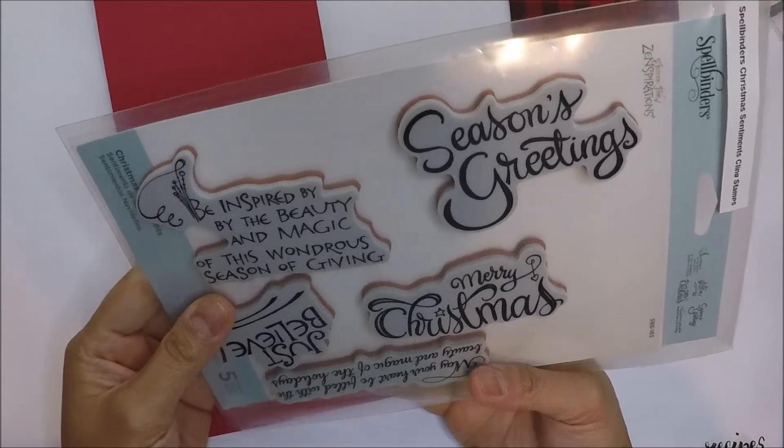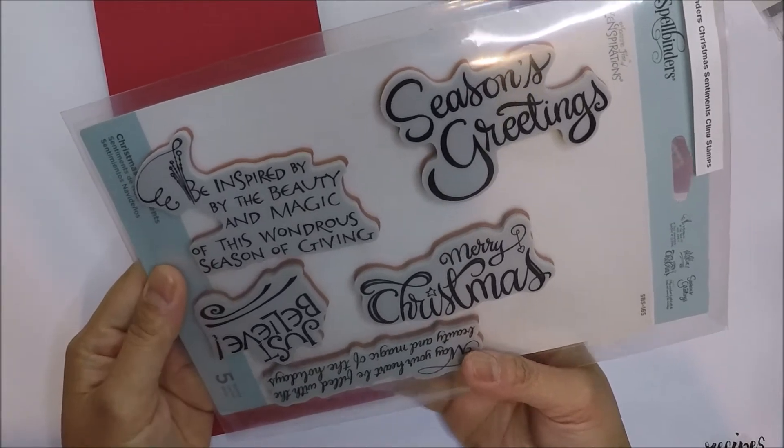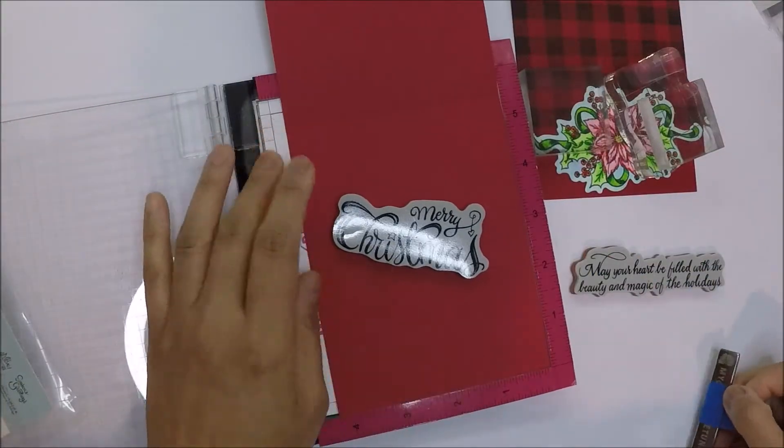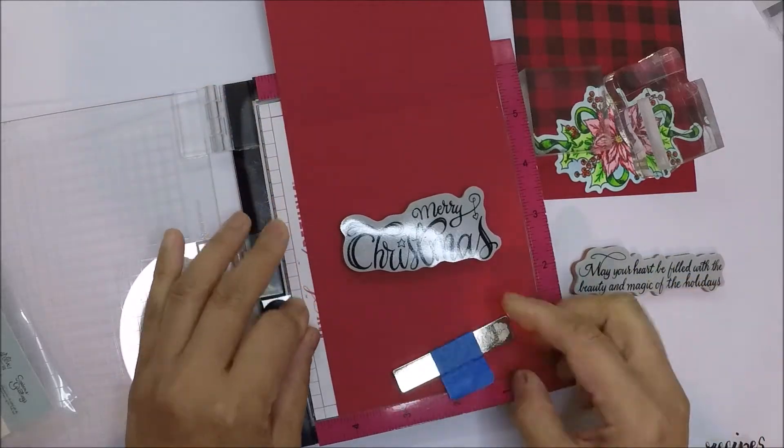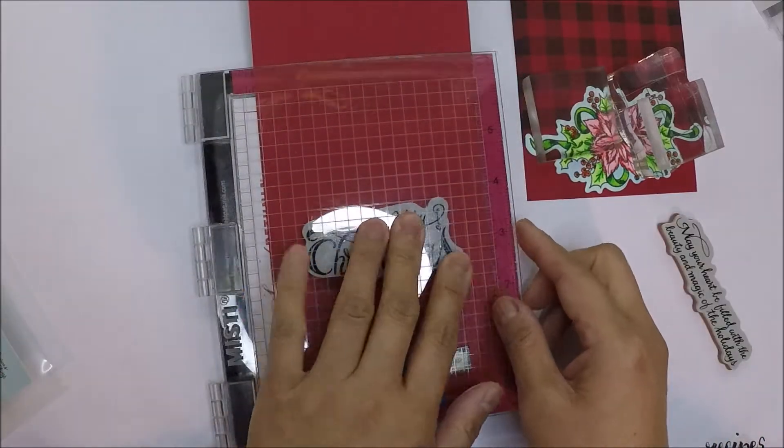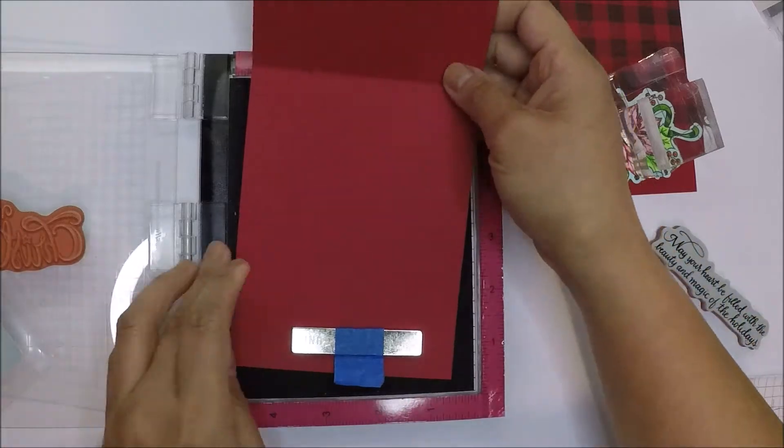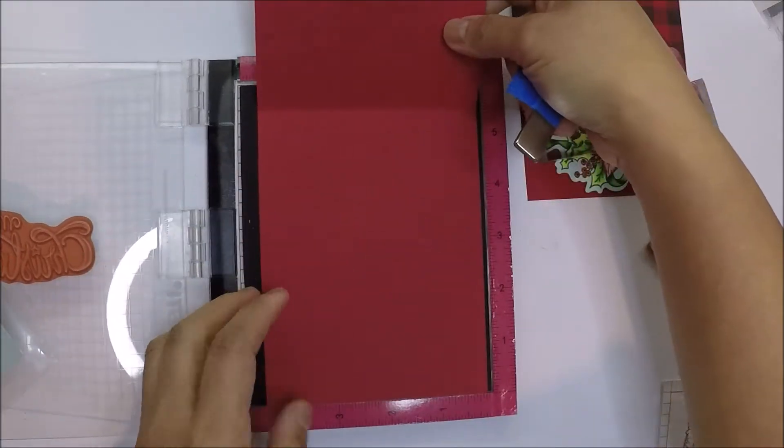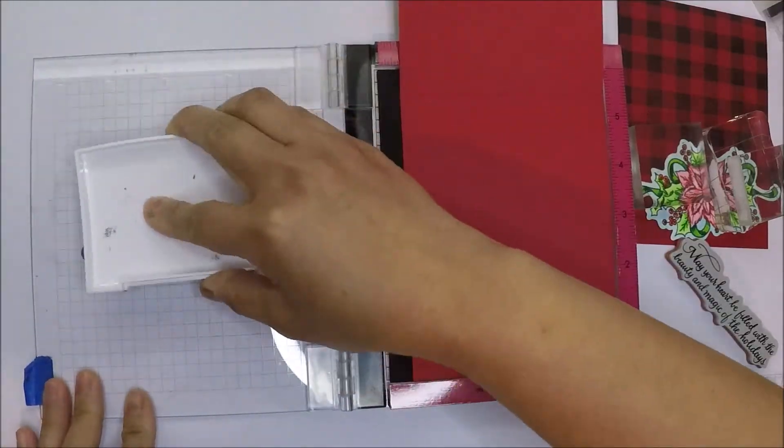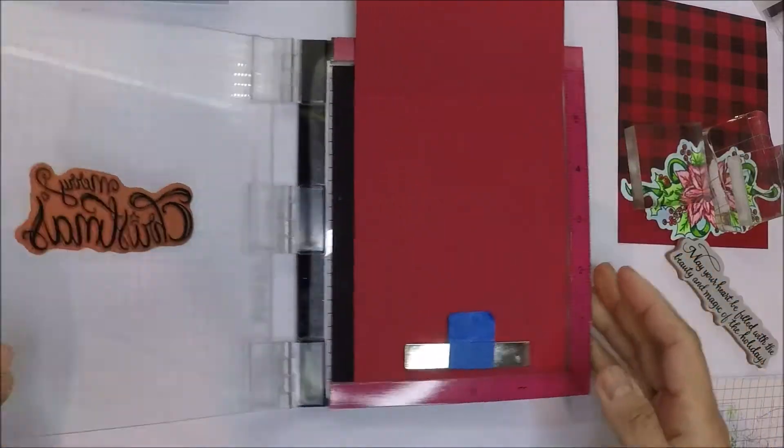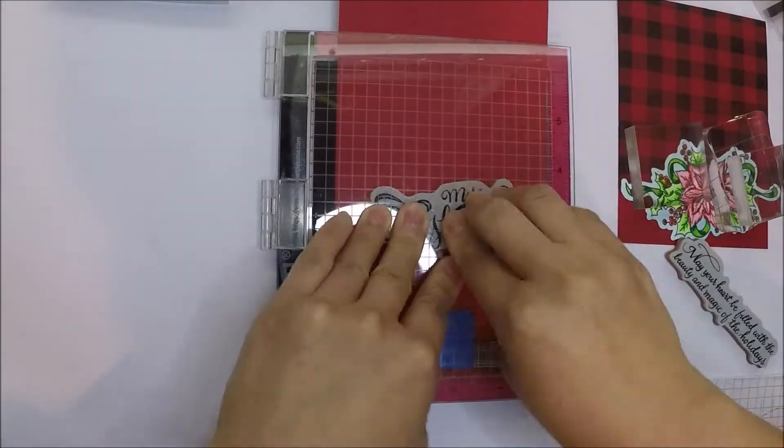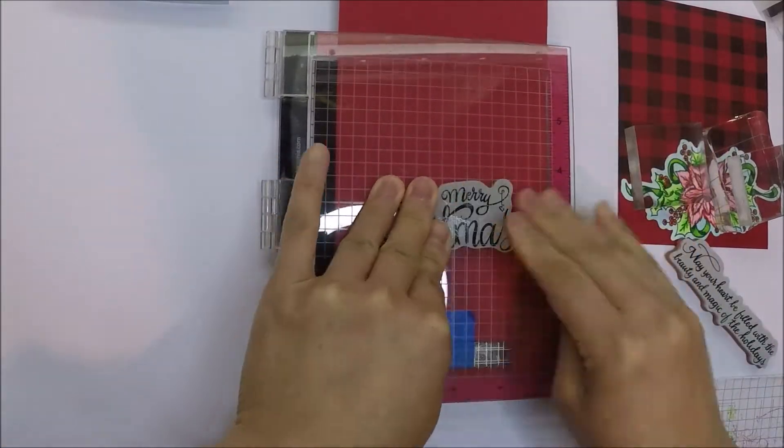I didn't add a sentiment in front of the cards. Instead, I will add them inside the cards. For that sentiment, I used Spellbinder's Christmas Sentiments Cling Stamp Set. I used VersaFine Onyx Black Ink to stamp the sentiment inside the cards to match the color of the plaid in front of the cards.